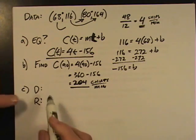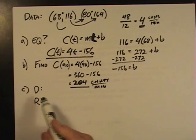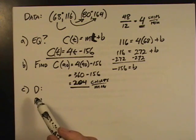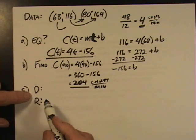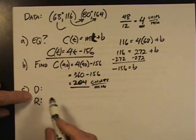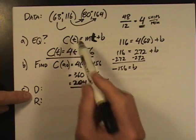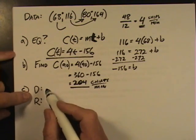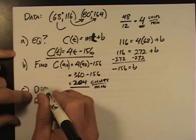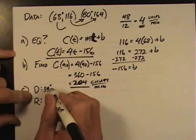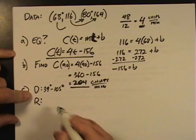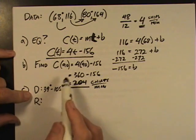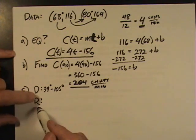Then, they want you to find the domain and the range. Well, if you read in the book, they're telling you that crickets are really only active from 39 degrees to 105 degrees. Well, the temperature, that's your input. That's your independent variable. So, I just simply write 39 degrees to 105.